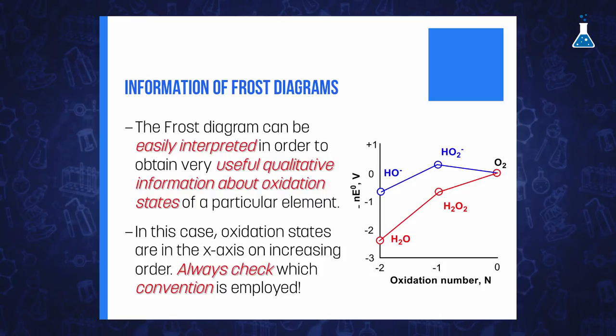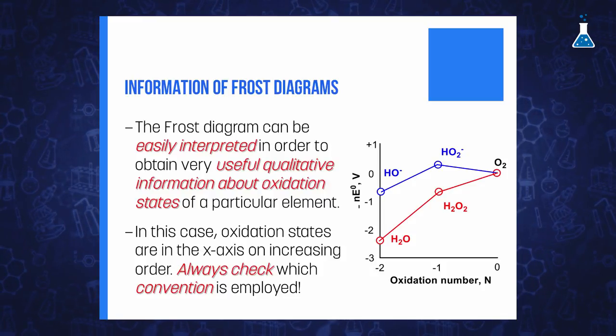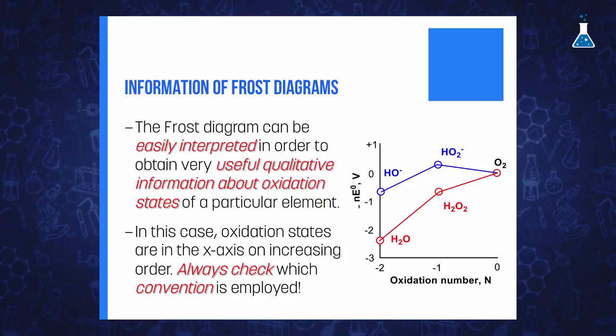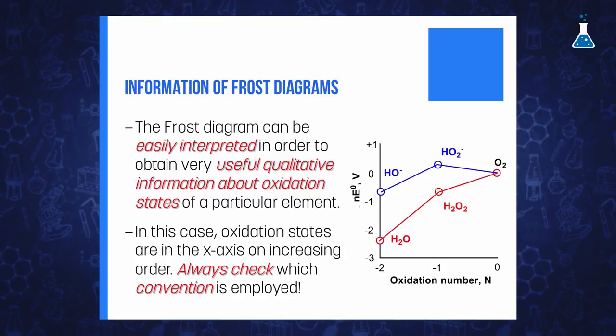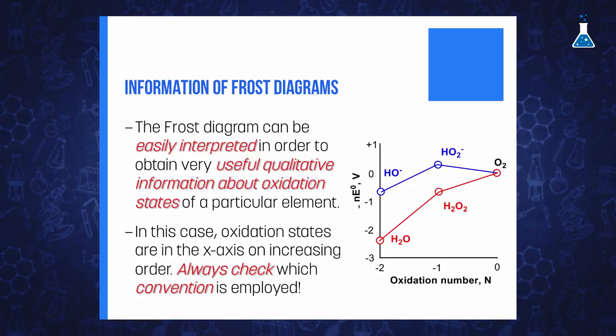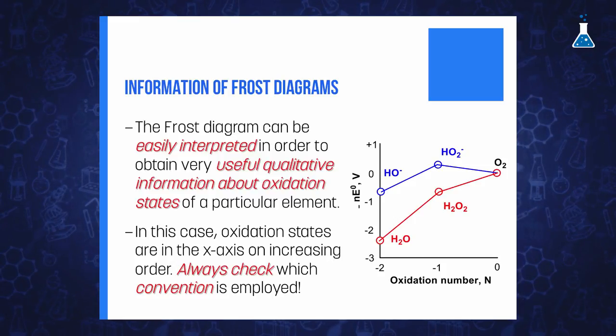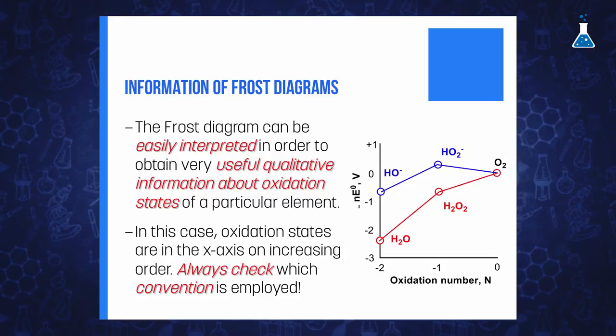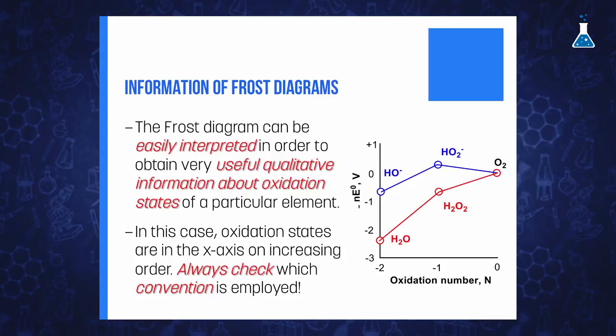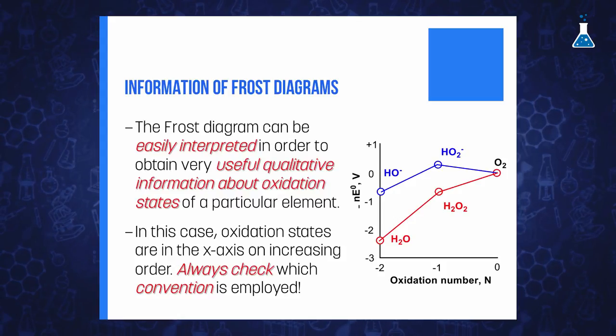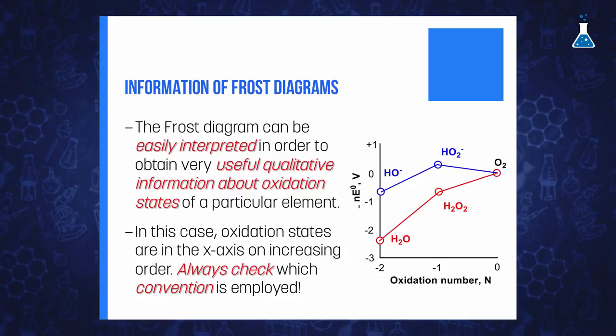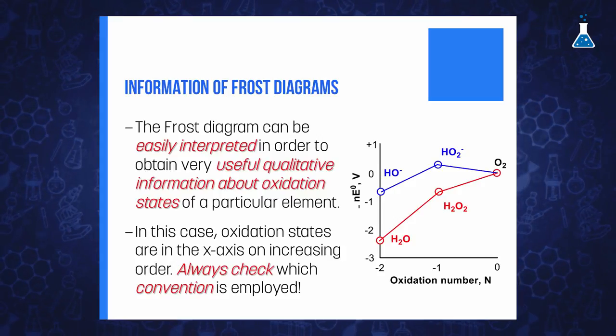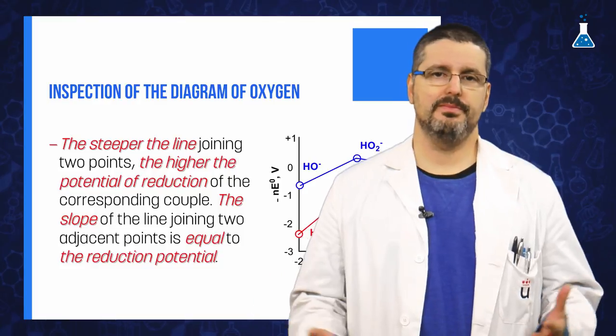As we have discussed, the Frost diagram can be easily interpreted in order to obtain very useful qualitative information about the oxidation states of a particular element. First, it is important to remember that although we have represented the diagram with oxidation states on the x-axis in increasing order, and we will follow that convention through this course, you can find similar diagrams in the literature on the contrary way, that is, decreasing the oxidation state from left to right.